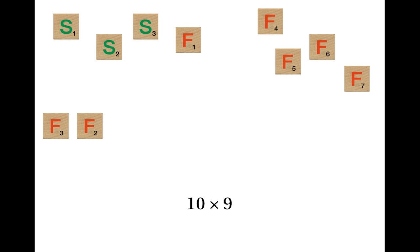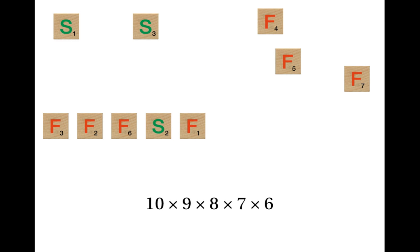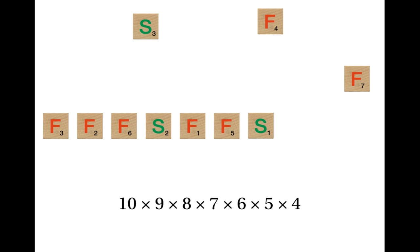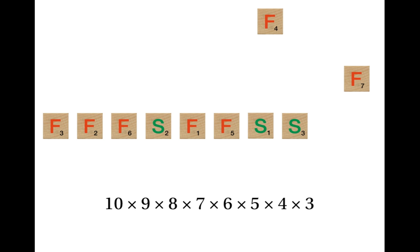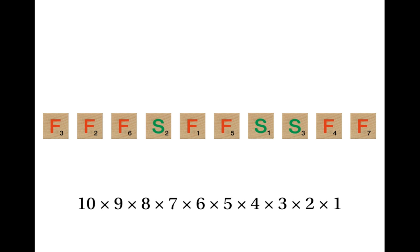Now there are only eight tiles left, and only eight possibilities for the third tile. So for the first three tiles, the number of possibilities is ten times nine times eight. You can see that if we carry on in this way, there are seven possibilities for the fourth tile, six for the fifth, five for the sixth, four for the seventh, three for the eighth, two for the penultimate tile, and only one possibility for the last tile. So in total, the number of possible ways of putting them down is ten times nine times eight times seven times six times five times four times three times two times one, which is ten factorial.